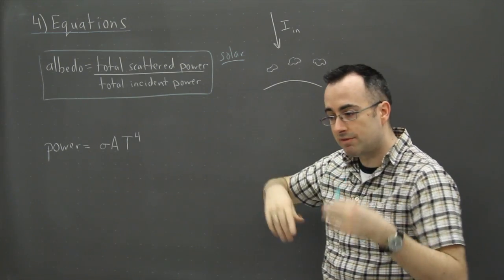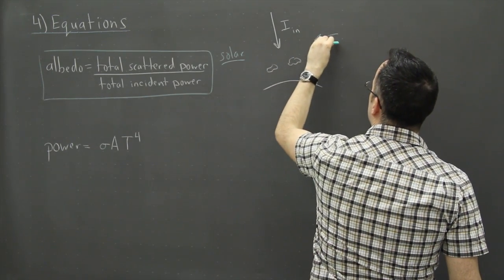If, for example, there's lots of ice, those reflect it very well. So basically we're looking at that compared to what comes back out. So I'll say 'I out'.